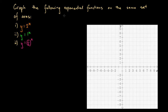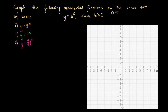As a quick review, an exponential function takes the form y equals b to the x, where b is some constant greater than 0. However, depending on what b is, we get graphs that look quite dissimilar from one another. In particular, we get three broadly different types of graphs: one where b is between 0 and 1, another where b equals 1, and a third where b is greater than 1.